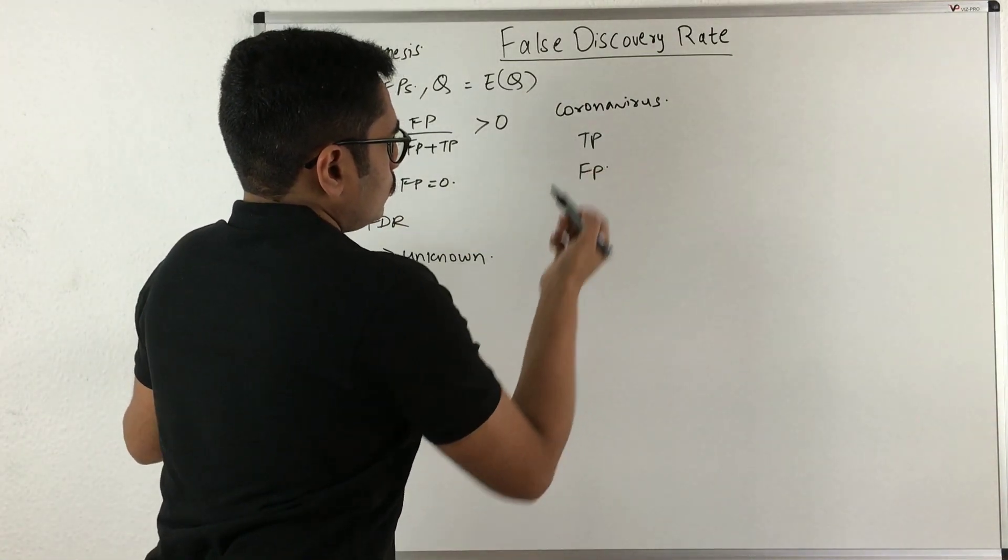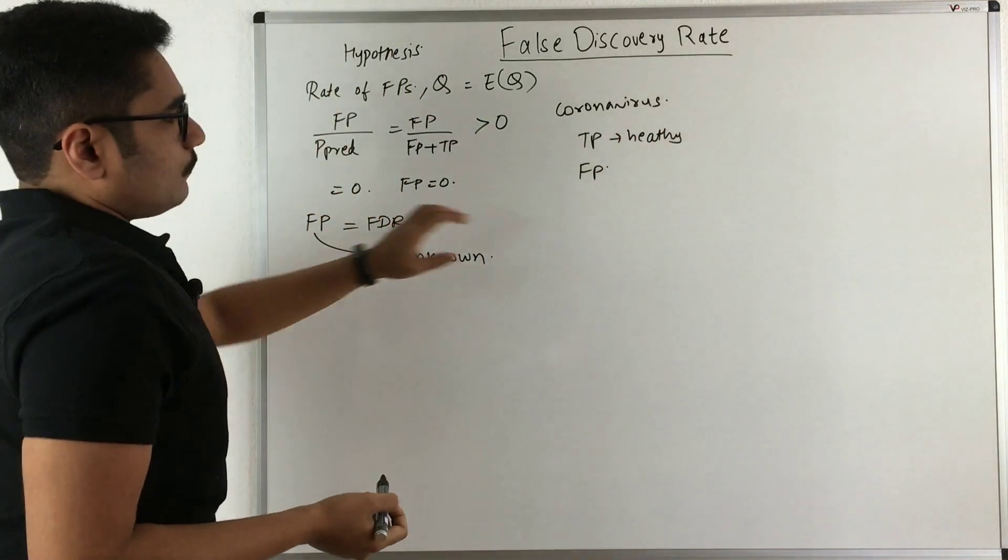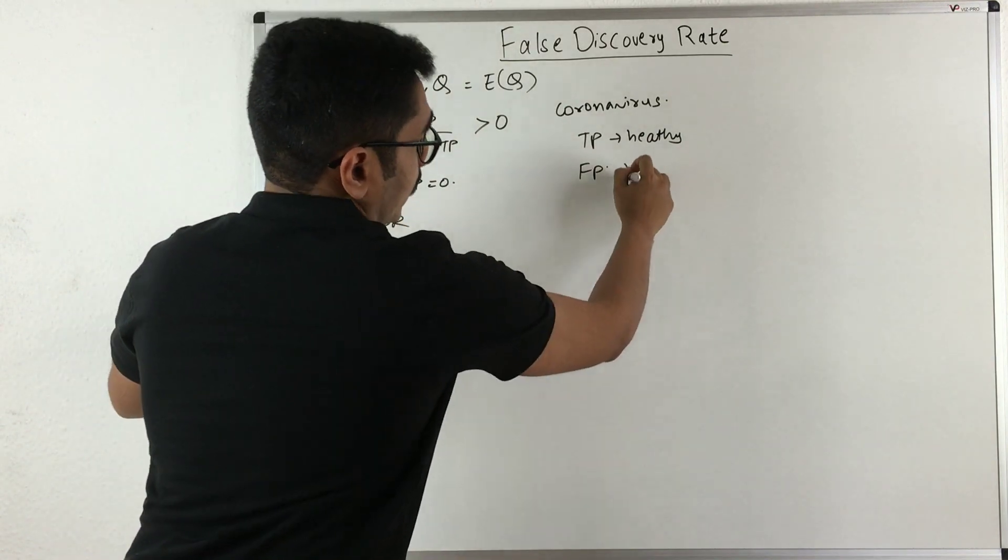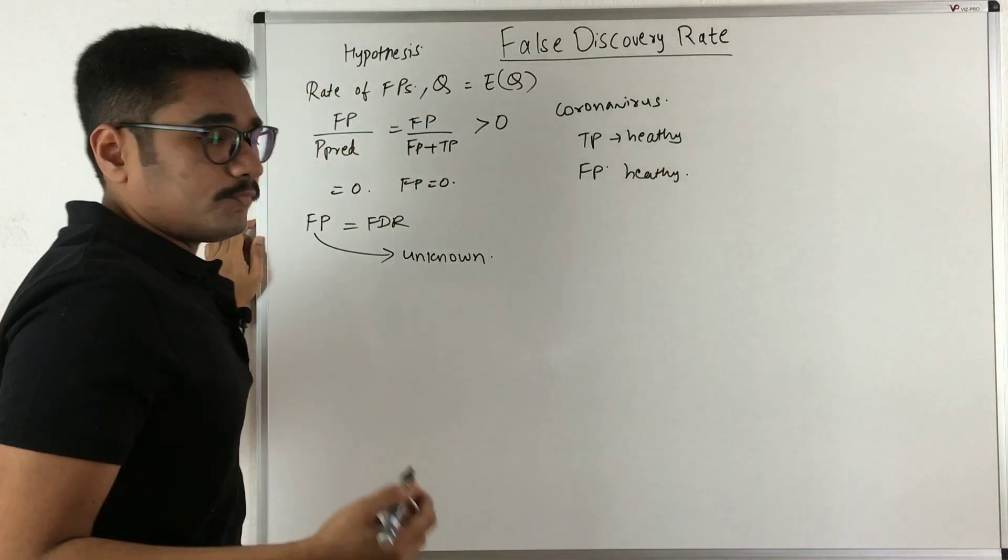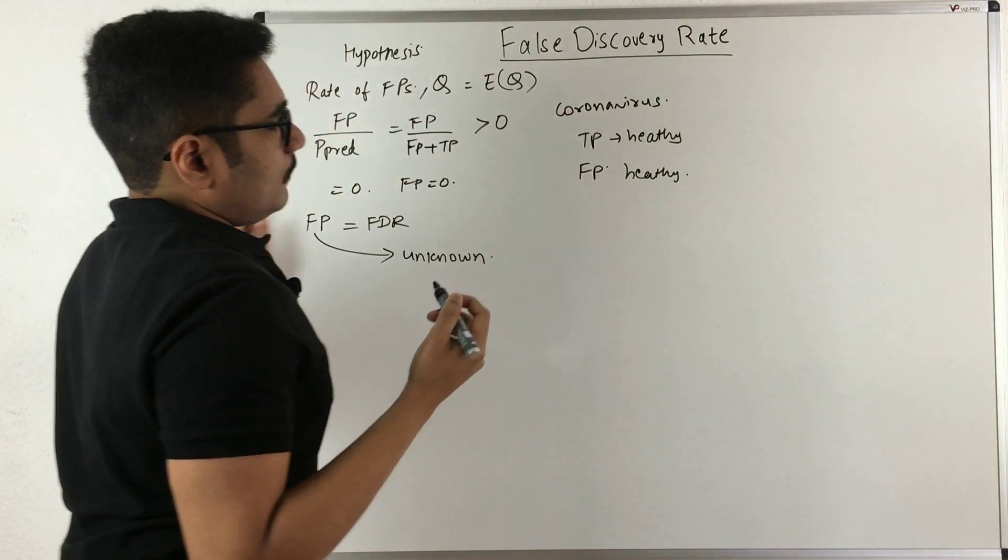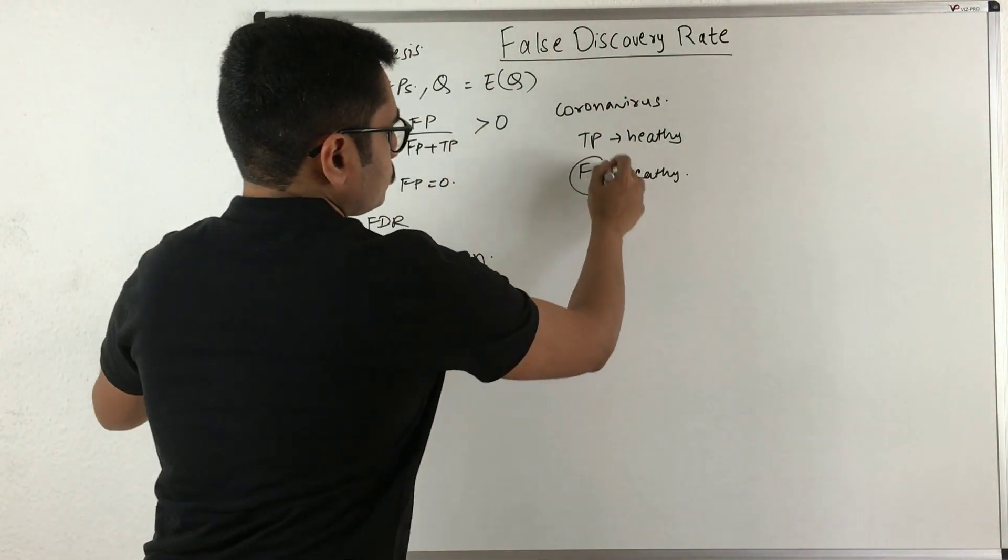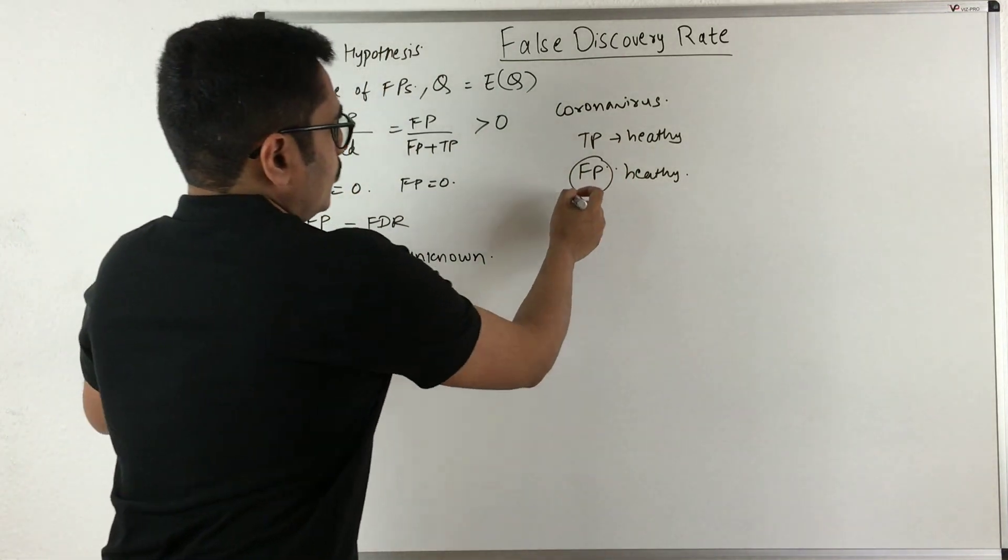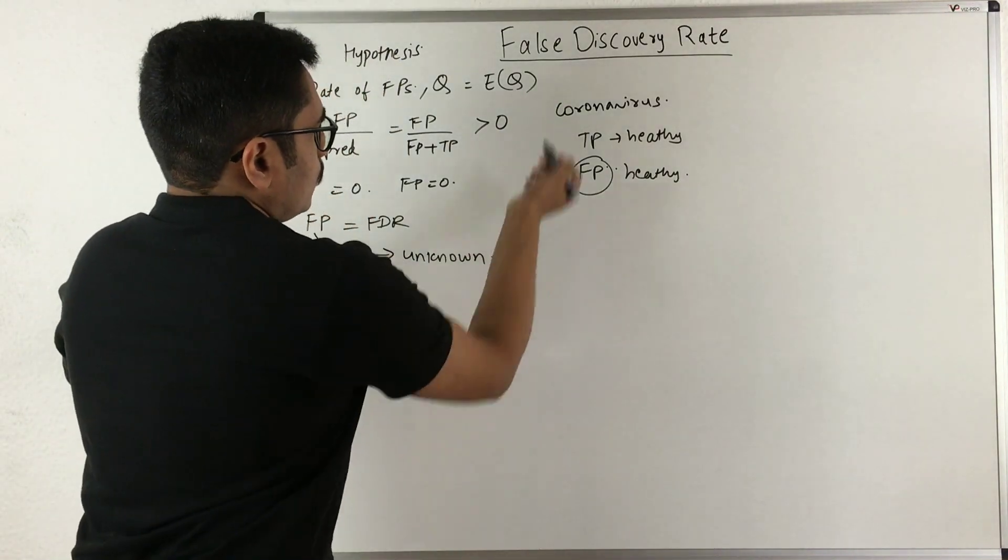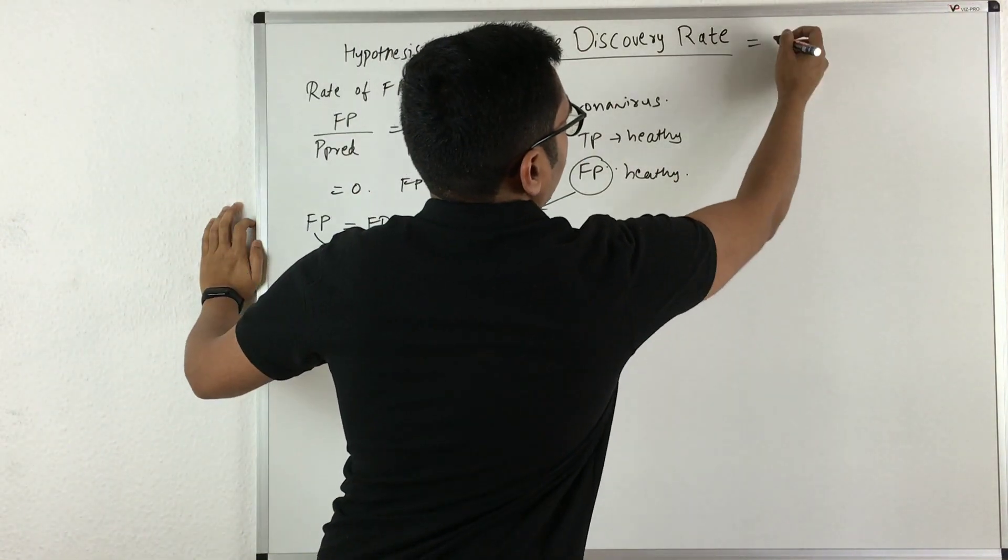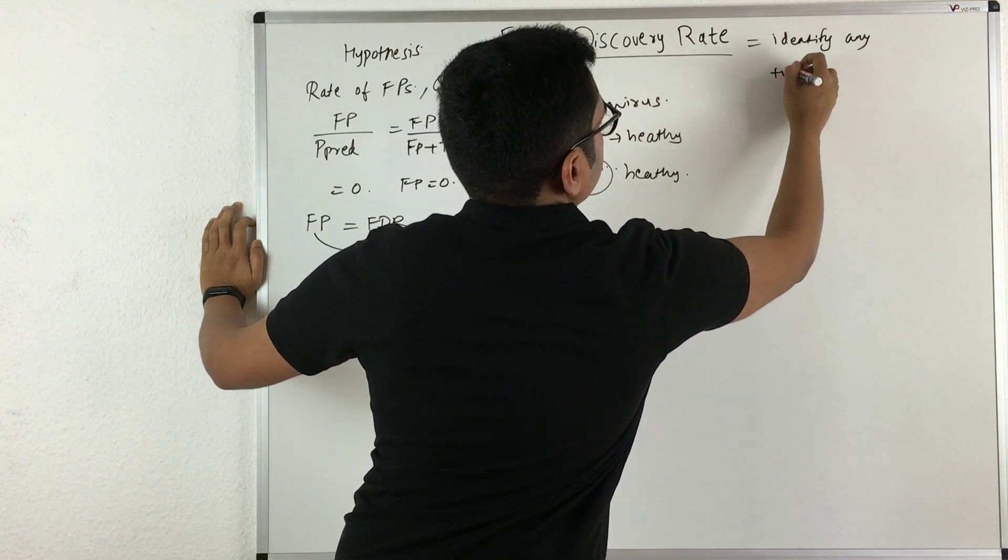True positives are those persons who are healthy and do not suffer from this virus, but false positives are those who are healthy but are detected or told that they have been affected with coronavirus. So it becomes most important that you treat these kinds of scenarios. There you need some kind of false discovery rate measuring technique. False discovery rate will help you identify any positive results.